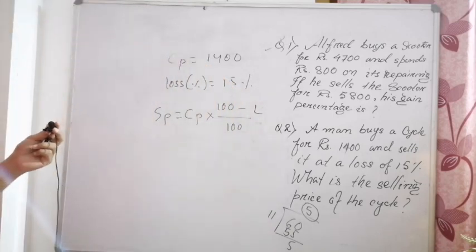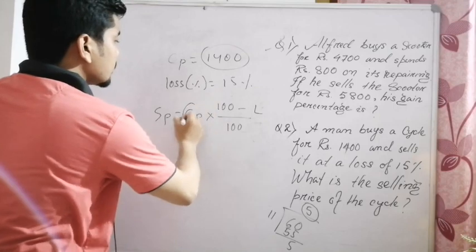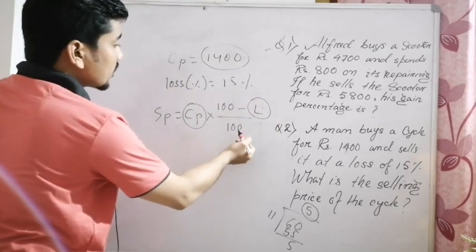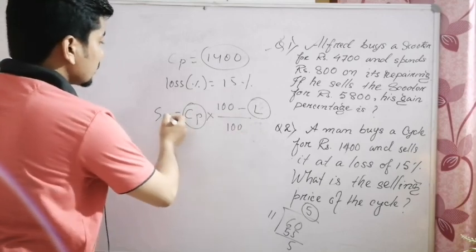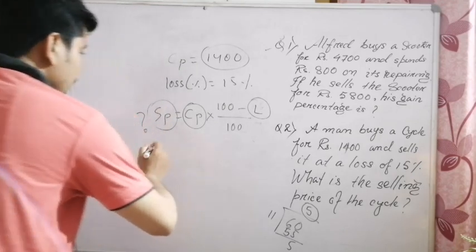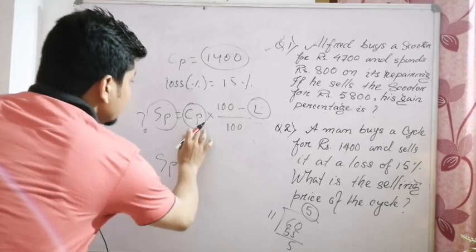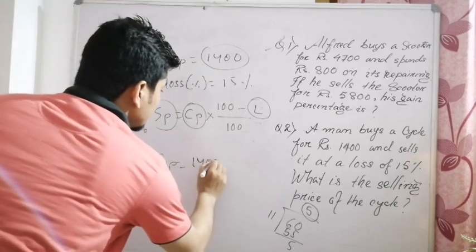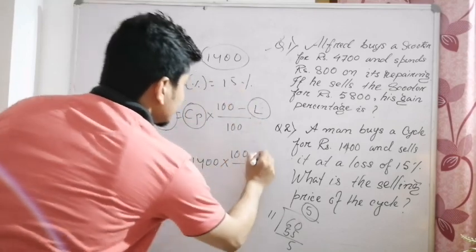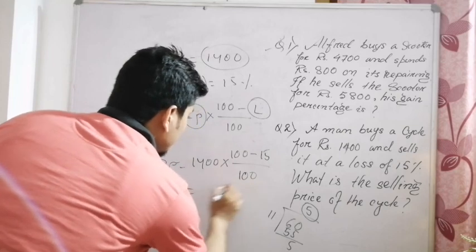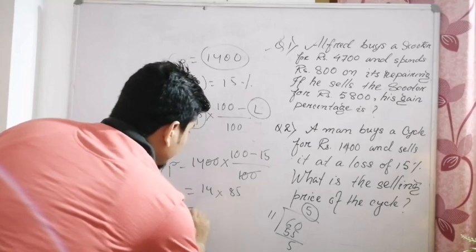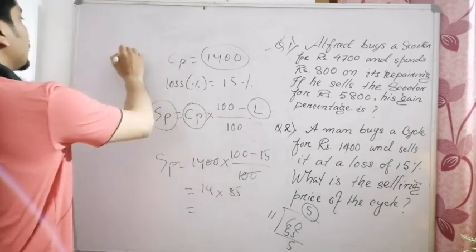So if the question involves a loss, we use minus in the formula: SP equals CP into (100 minus L) divided by 100. The CP is 1400 and L is 15%, so we get 1400 multiplied by 85 divided by 100. That gives us 85 multiplied by 14, which equals Rs. 1190.